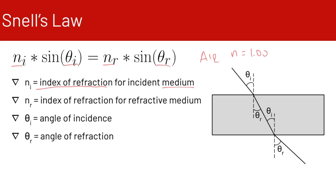The index of refraction is determined experimentally and the medium itself determines it. In this diagram, if this were air and this were water, air has an index of refraction of 1.00, and water has another index of refraction that you would plug into the equation.